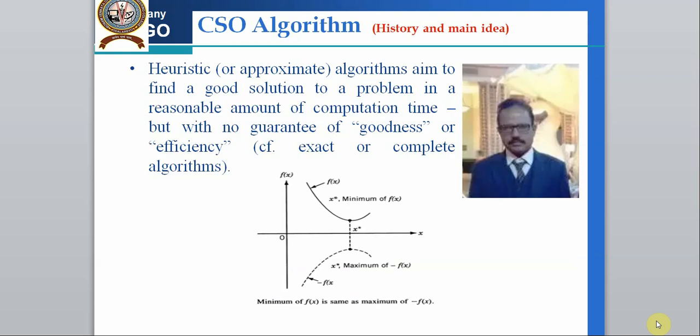Before we go for the Cuckoo Search Algorithm, let us have an idea about heuristics and meta-heuristics. Heuristics, sometimes called approximate algorithms, aim to find a good solution to a problem in a reasonable amount of computational time — that means with limited time we want to find a solution — but with no guarantee of goodness or efficiency, unlike exact or complete algorithms.